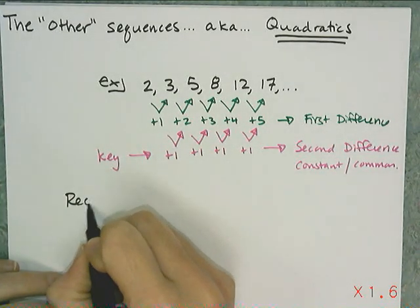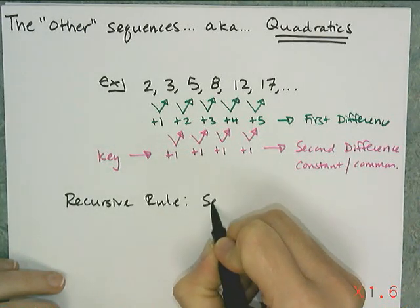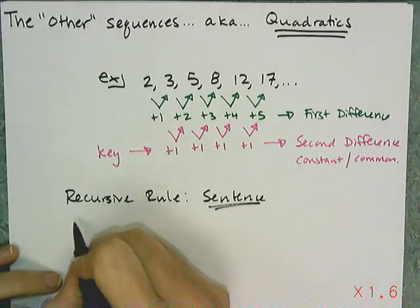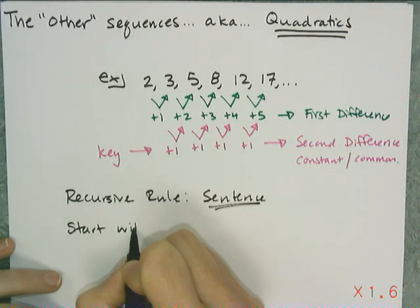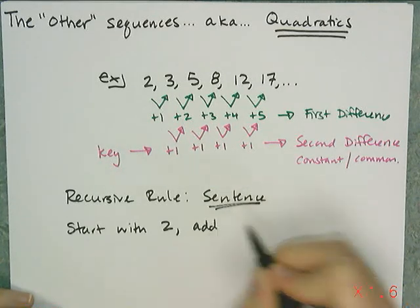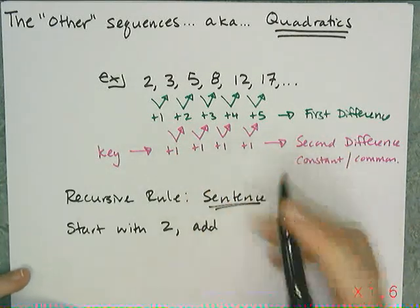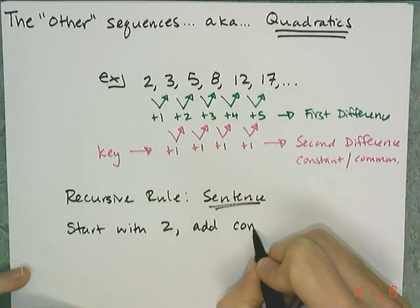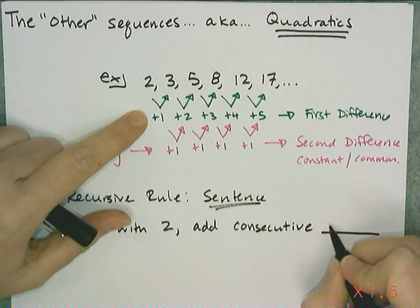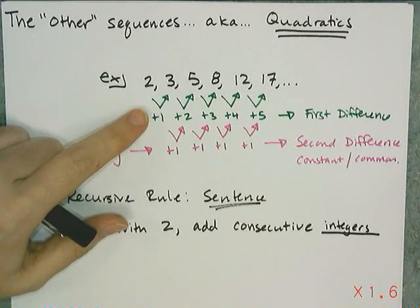So if I want to write the recursive rule, or formula, in sentence format, these always kind of have the same sort of flow to them. You always have a start with, and in this case, I'm going to start with 2. That's true for all recursive formulas. You always have to tell me what to start with. And then I'm going to add. Now, I don't add the same number over and over again. I'm adding a pattern. And the easiest way to describe this pattern is by using the phrase consecutive, and then I'm going to fill something in here. In this case, it's consecutive integers. It could be consecutive even numbers, consecutive multiples of three, consecutive multiples of four.